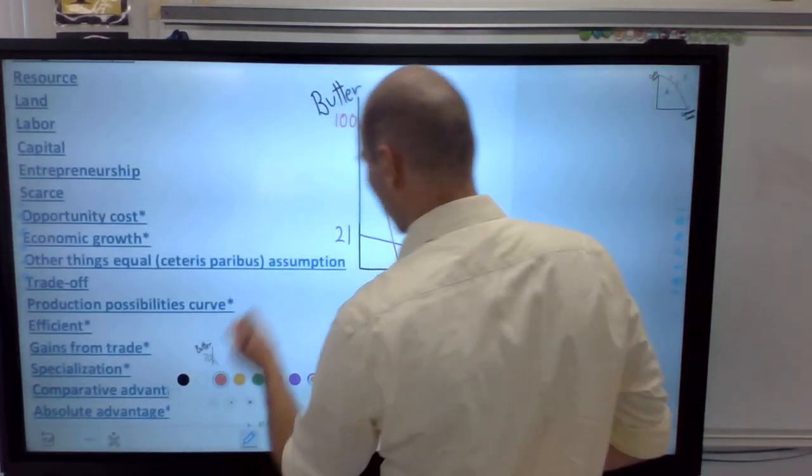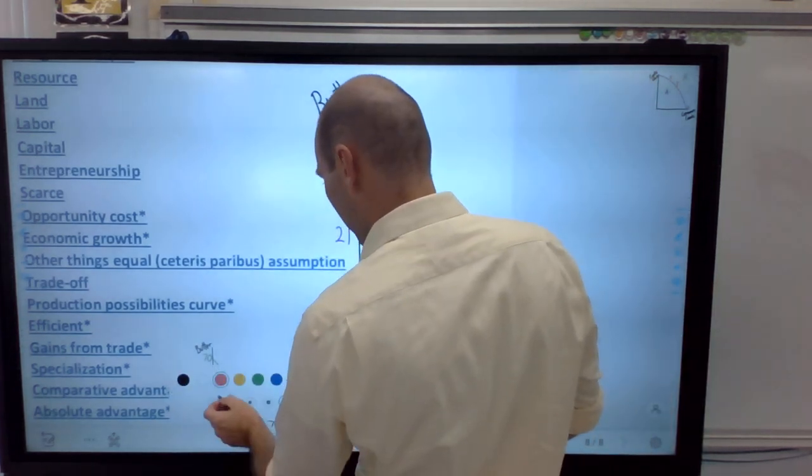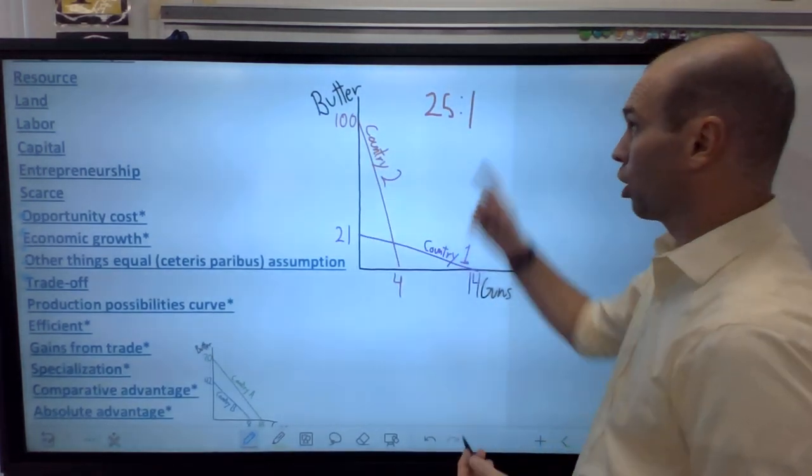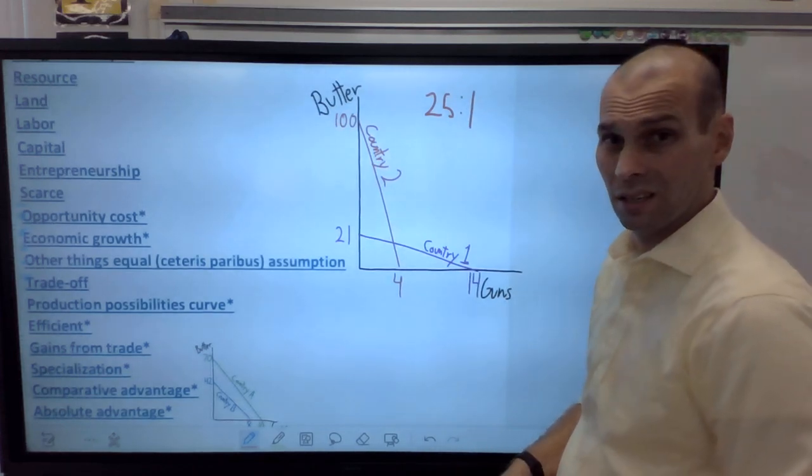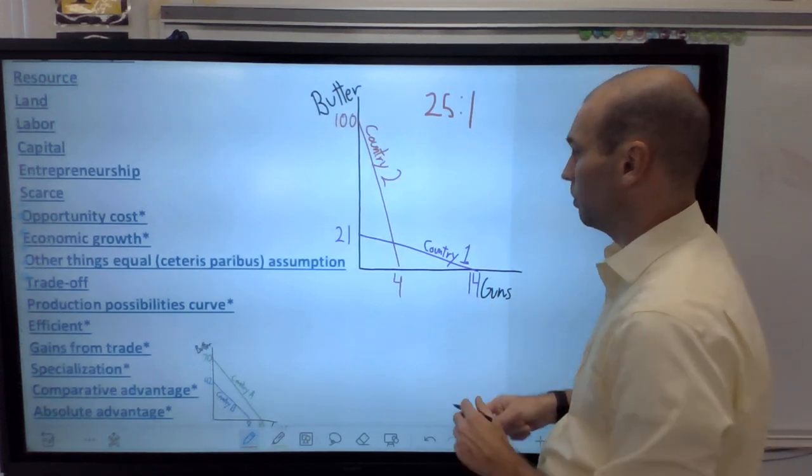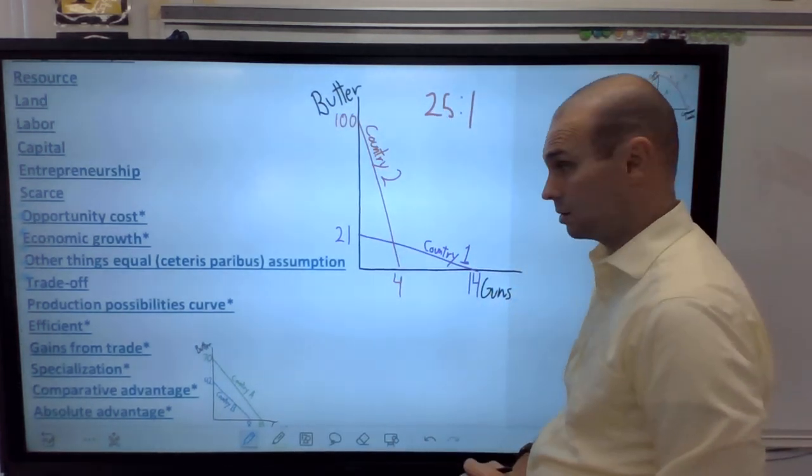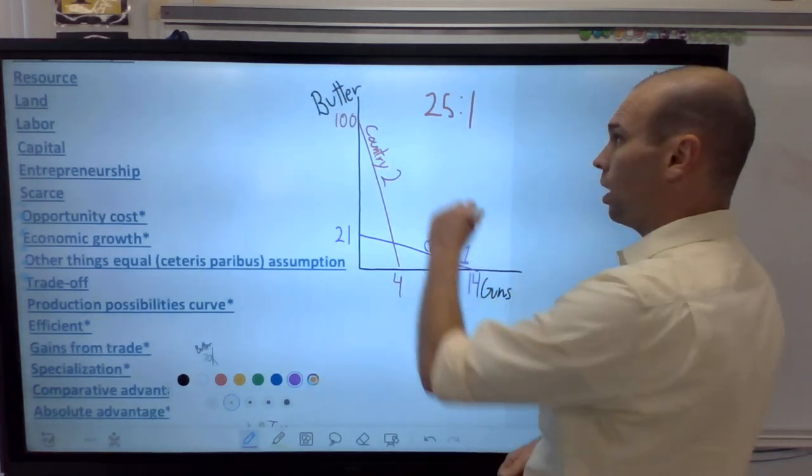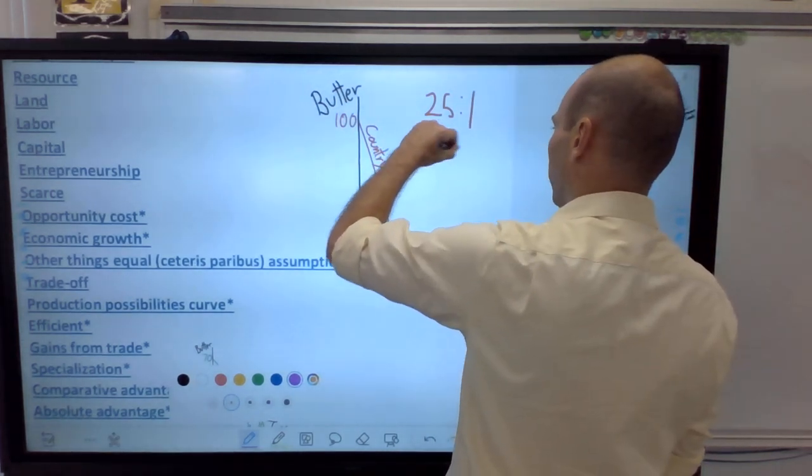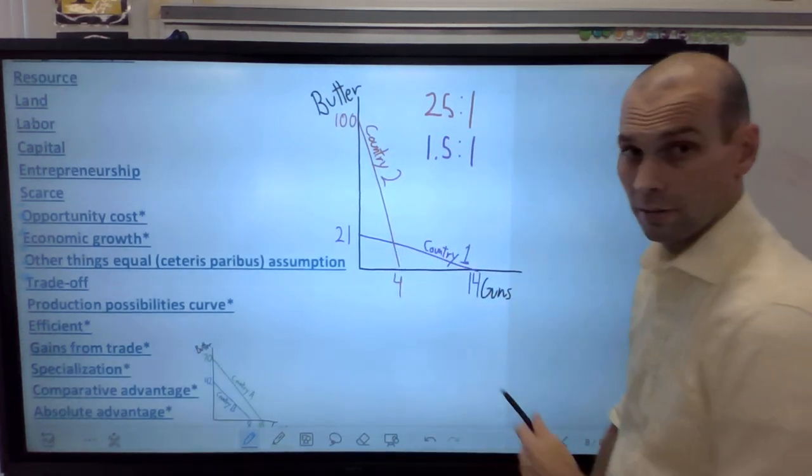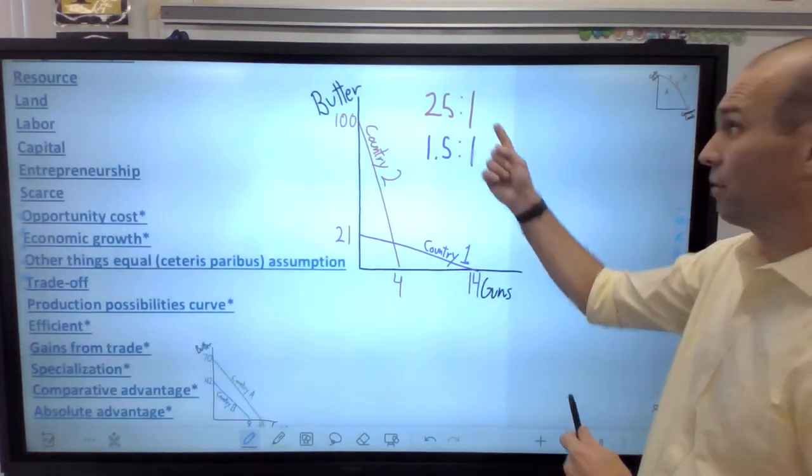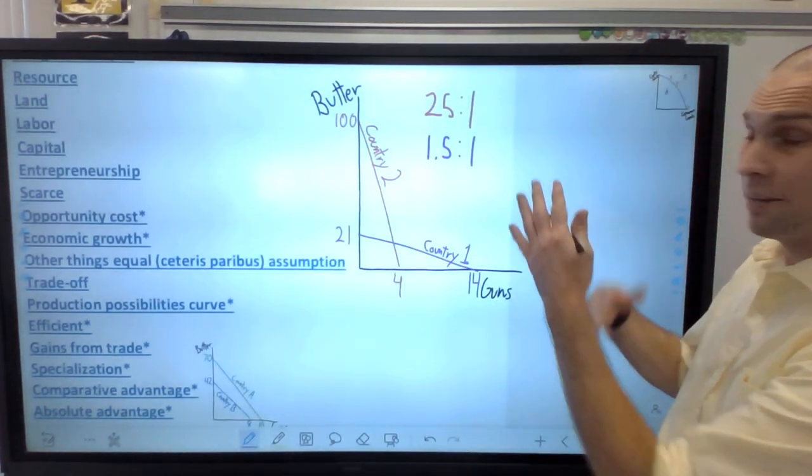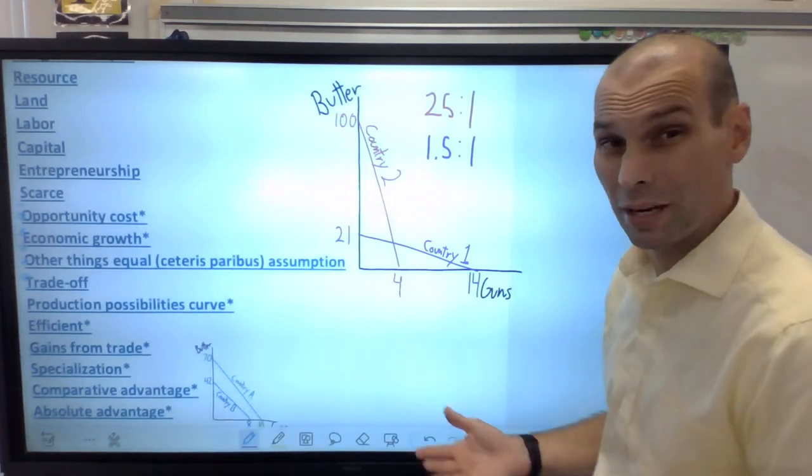So what it means is this. If they're both producing those goods, we can look at what is an absolute advantage. An absolute advantage simply goes to the country that makes the most of a good. So country two made 100 butters, country one made 21. So who has the absolute advantage in butter? Well, country two. And who has the absolute advantage in guns? Well, country one made 14, country two made four. So obviously country one has the absolute advantage in guns. That's how easy absolute advantage questions are.